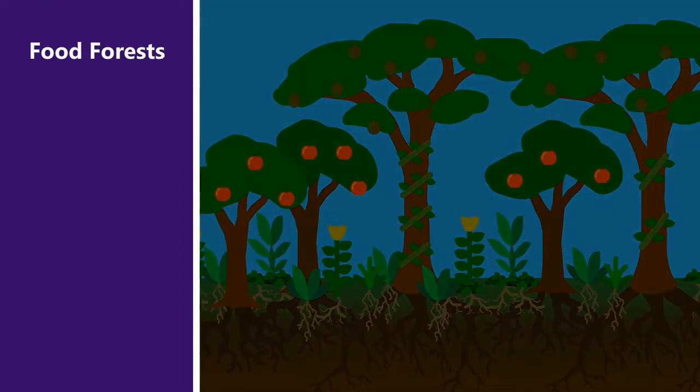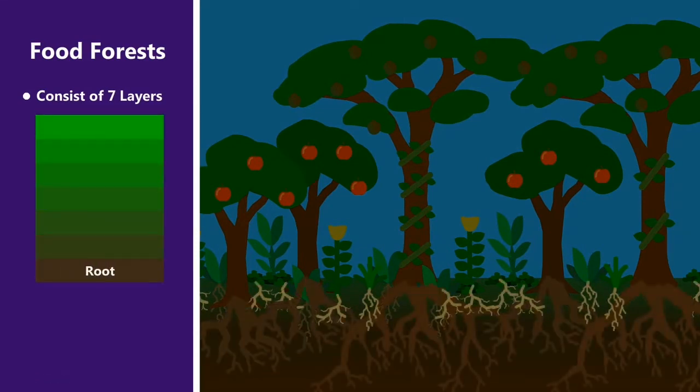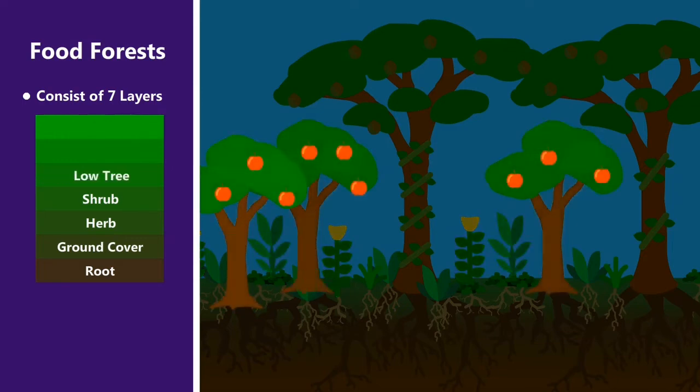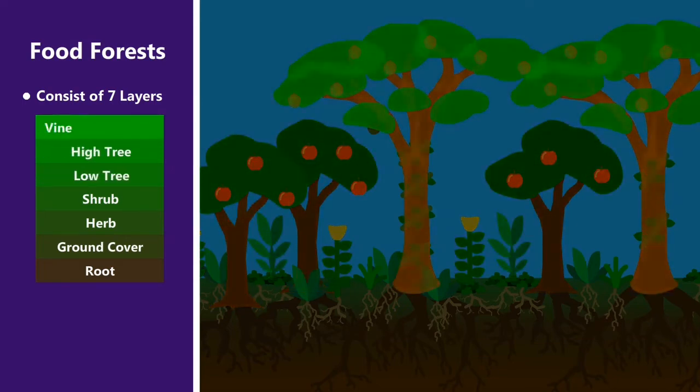Food forests are often thought of as comprising seven layers. The root layer, the ground cover layer, the herb layer, the shrub layer, the low tree layer, the high tree layer, and the vine layer.